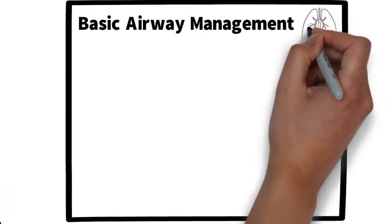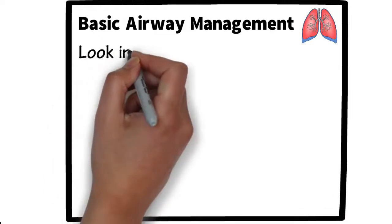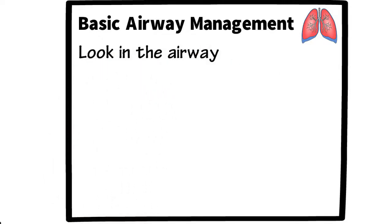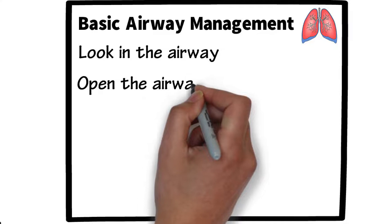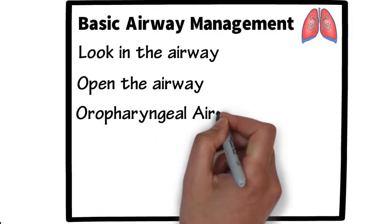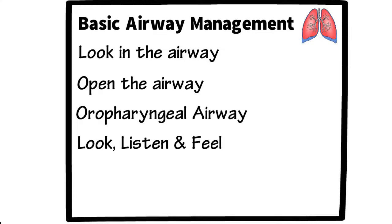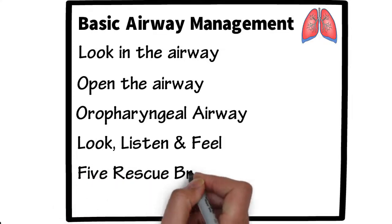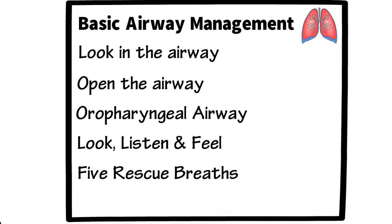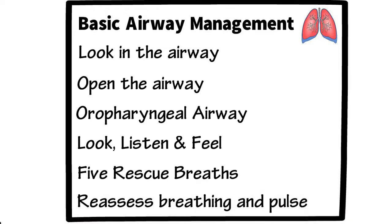We'll then move on to basic airway management. First we need to look in the airway — are there any foreign body obstructions? Then we'll open the airway, size up and place an OPA, and look, listen, and feel for breathing for up to 10 seconds. We're then going to provide five rescue breaths, and then reassess breathing and check for a pulse.